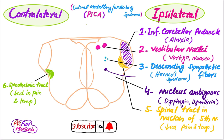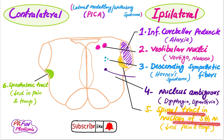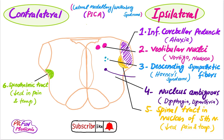Due to the involvement of the nucleus ambiguus, the patient will have dysphagia and dysarthria. Due to the involvement of the spinal tract and nucleus of the fifth cranial nerve, the patient will have loss of pain and temperature sensation on the ipsilateral side of the face. These are the ipsilateral findings — the patient has these findings on the side of the lesion.